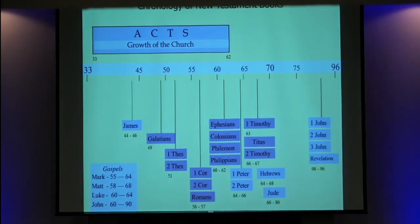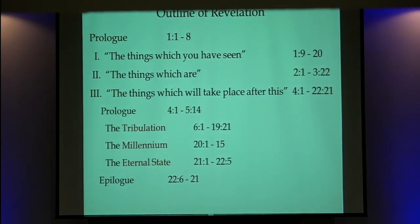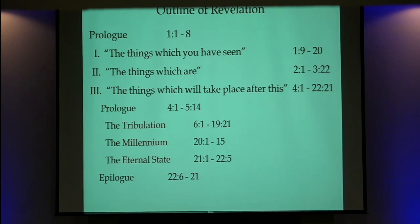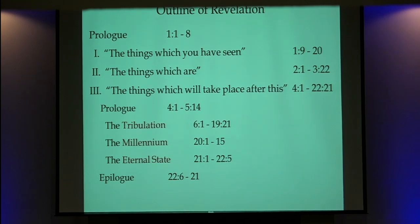We're in the book of Revelation and moving now to the next phase. Revelation was written at the end of the first century, around 96 A.D., along with 1st, 2nd, and 3rd John. John writes from the Isle of Patmos. The outline: chapter 1 is the things you've seen — the risen Christ in glory. Chapters 2 and 3 are messages to the seven churches — the things which are now. Beginning in chapter 4 to the end, everything is future.